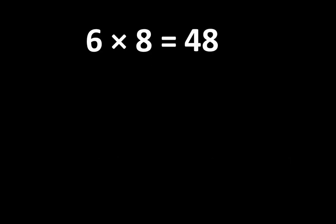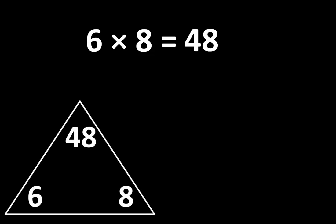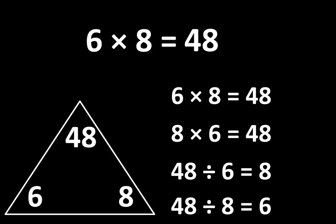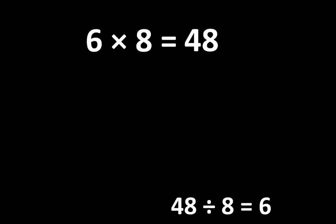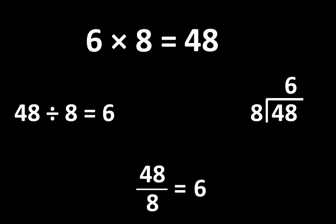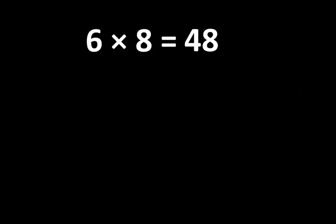6 times 8 is equal to 48. Let's examine some ways that 6, 8, and 48 are related to each other. If 6 times 8 is equal to 48, then 8 times 6 is also equal to 48. And since multiplication is related to division, we also know that 48 divided by 6 is equal to 8, and 48 divided by 8 is equal to 6. There are several different ways to write this idea, and that can be very useful. So understanding 6 times 8 is more than simply knowing that the product is 48.